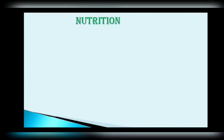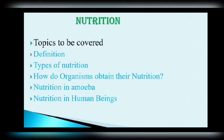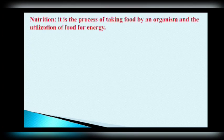First of all, we will discuss about nutrition. You should be aware of what nutrition actually means. The topics to be covered in this lesson are: definition of nutrition, types of nutrition, how organisms obtain their nutrition, nutrition in amoeba, and nutrition in human beings. So, what is the definition of nutrition? It is the process of taking food by an organism and the utilization of food for energy, which is known as nutrition.